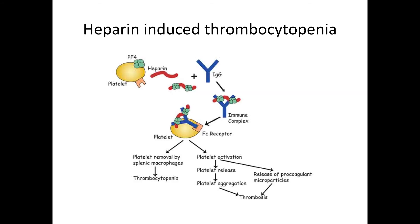Heparin-induced thrombocytopenia occurs because heparin binds to platelet factor 4 in the alpha granules of platelets, acting as a hapten. IgG then binds to this complex, and as it passes through the spleen, it gets stuck in Billroth's cords and is engulfed by splenic macrophages. It can also activate platelets to cause platelet release and aggregation, causing excessive thrombosis, which in turn leads to further thrombocytopenia.